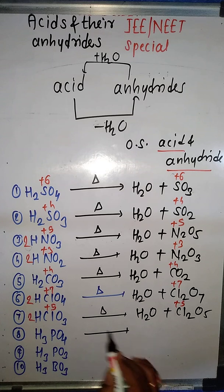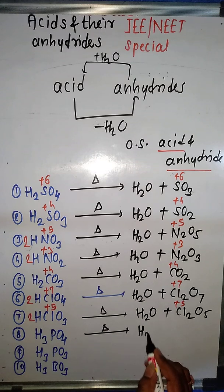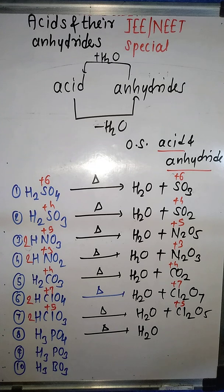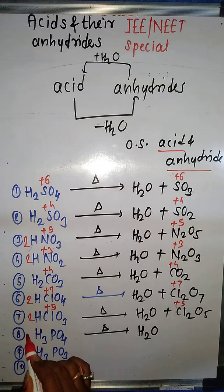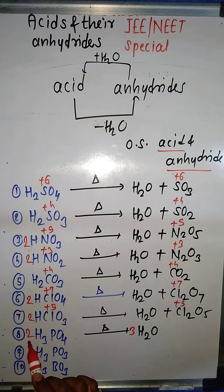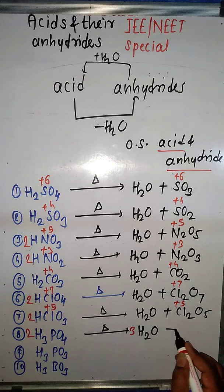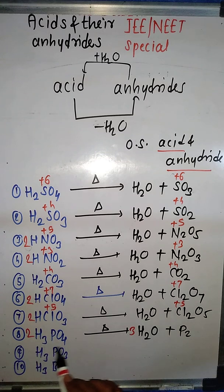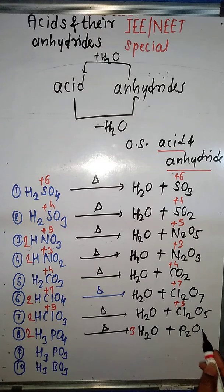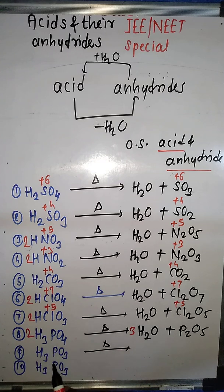Next example is H₃PO₄. The first expected product is H₂O. There are two hydrogens in H₂O and three in H₃PO₄ (odd vs even), so we cross-multiply: 2H₃PO₄ gives 3H₂O. Three oxygens are removed, leaving two phosphorus and five oxygens. So P₂O₅ is the anhydride of H₃PO₄. Note that P₂O₅ is sometimes written as P₄O₁₀ — they are the same compound.